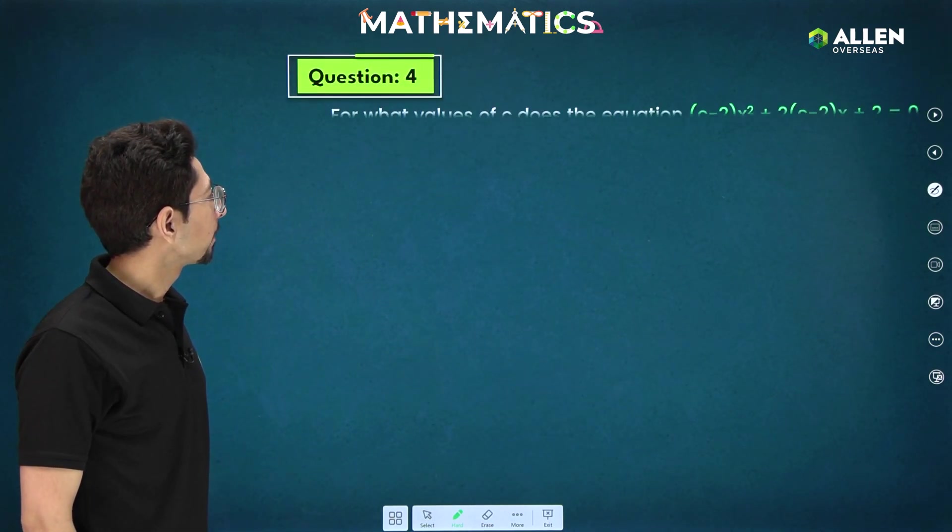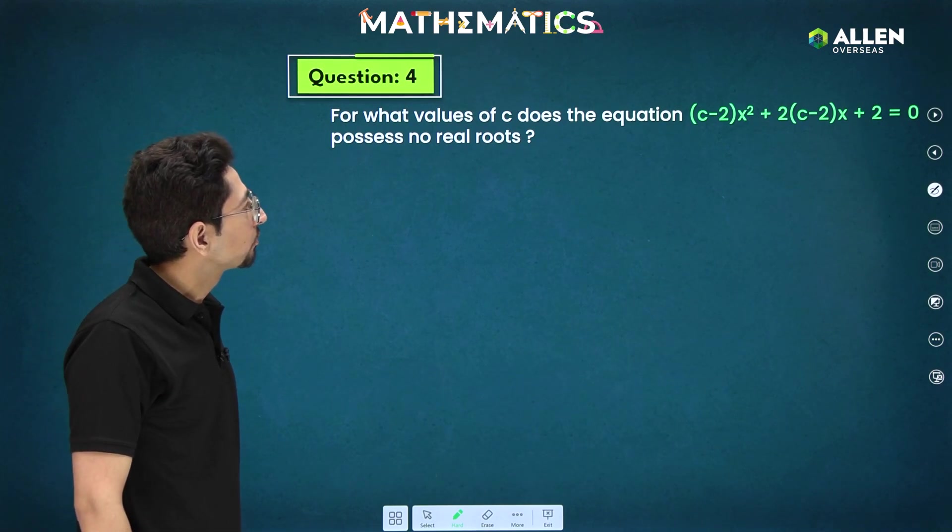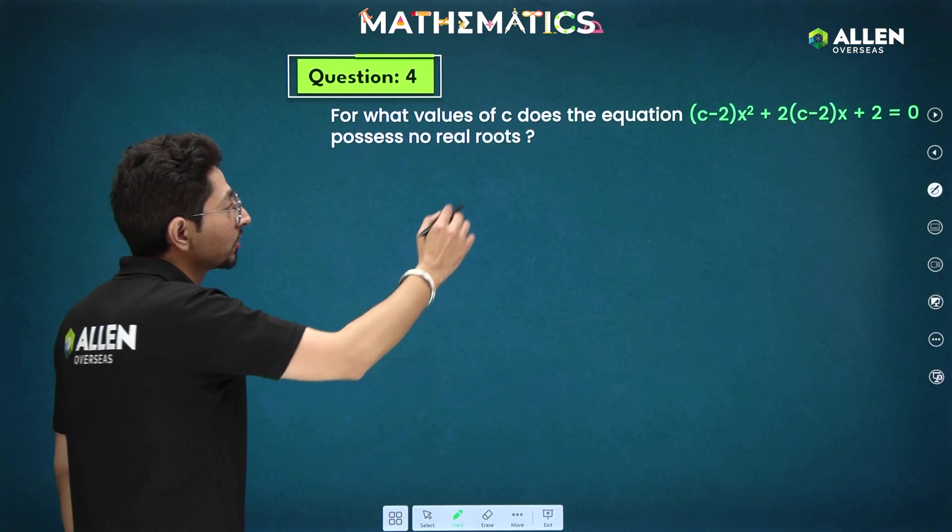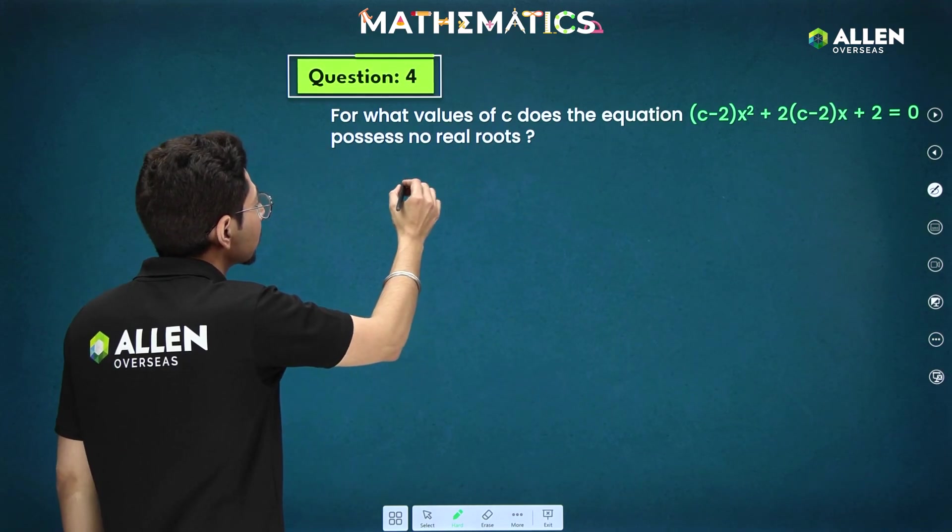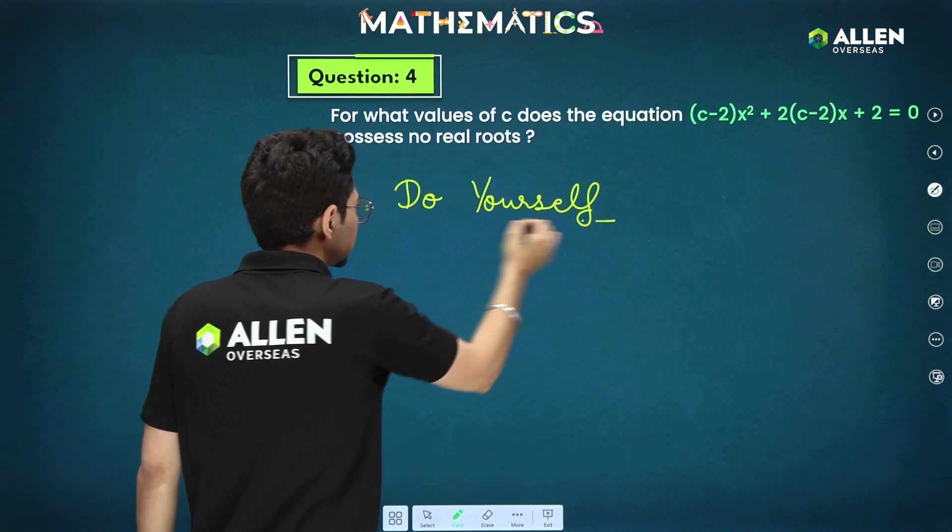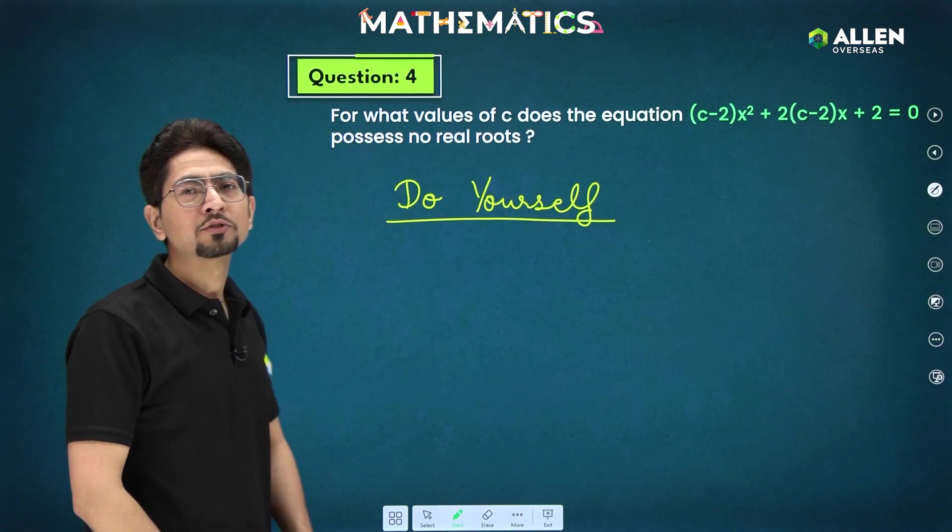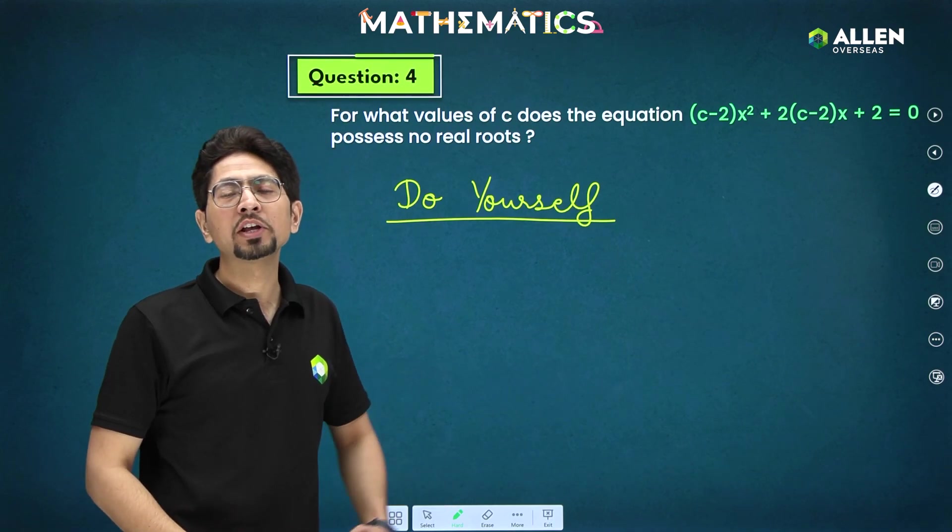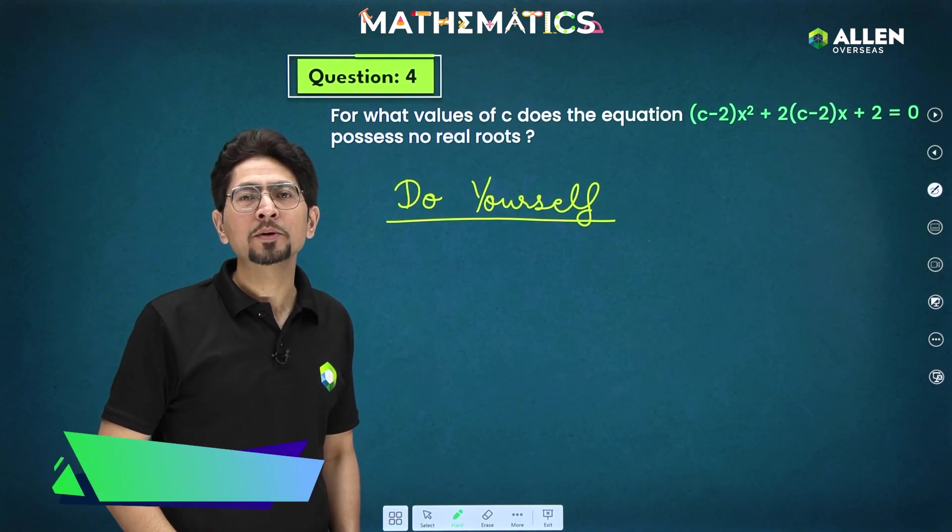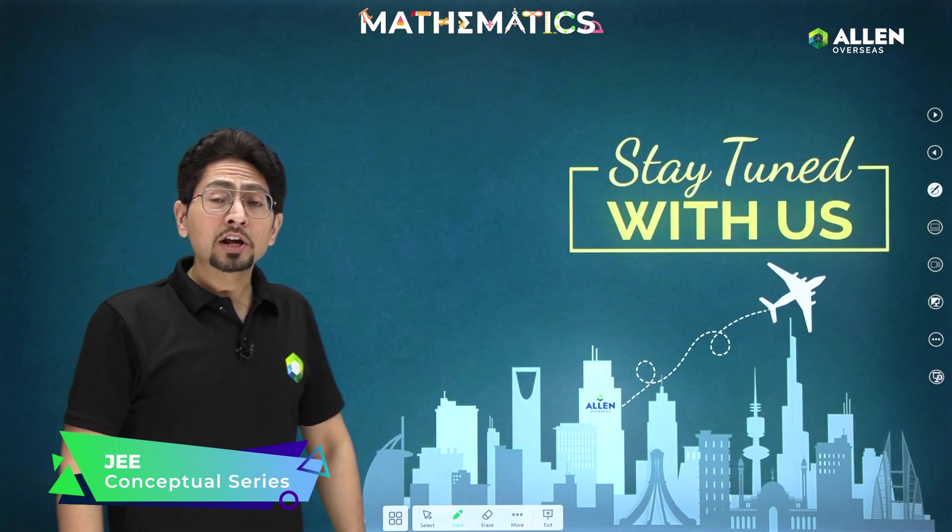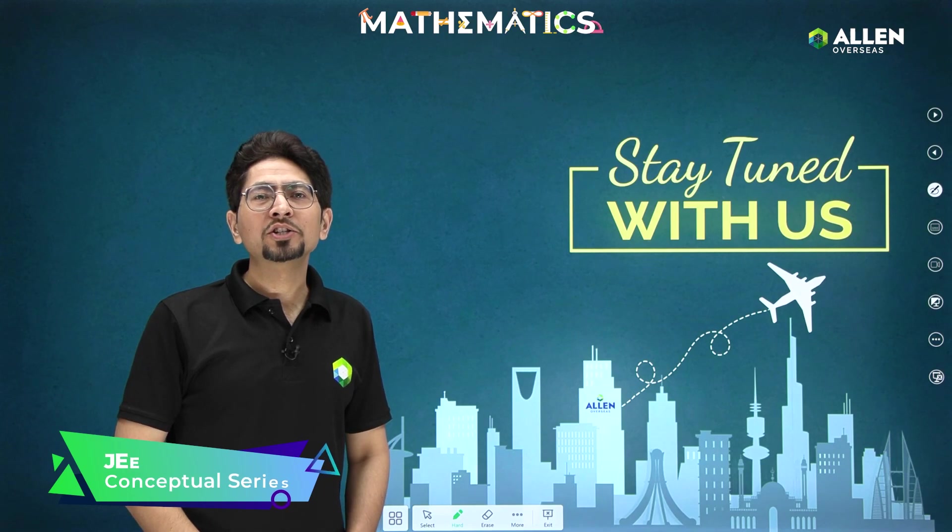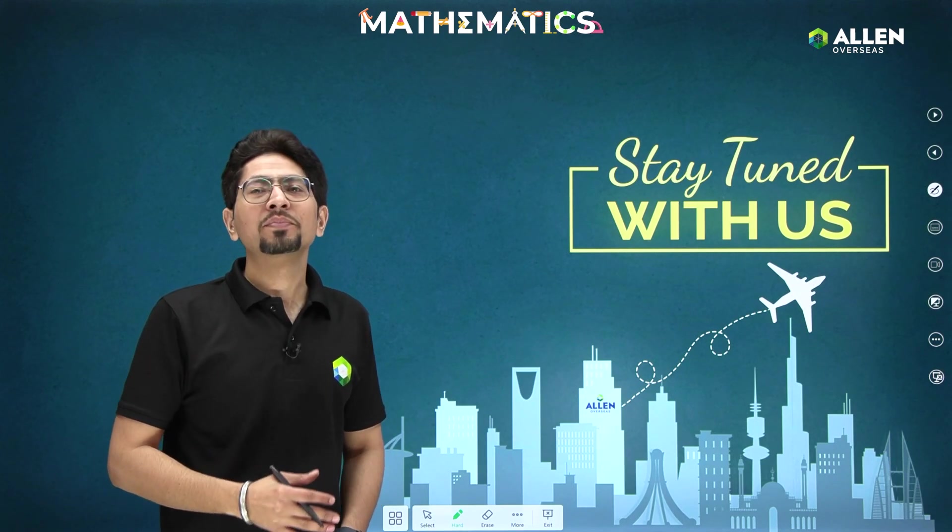Proceeding with next part. Next is, for what values of C, does the equation possess no real roots? Now, you have studied all the conditions. You just have to apply these conditions. So, make sure you do this question yourself. And do not forget to post your answers in the comment box. Also, if you have any queries or suggestions, you can post that in the comment box. We will definitely revert you back. We are coming up with more conceptual videos which will be really helpful for your J-E exam preparation. So, stay tuned with us. Thank you.